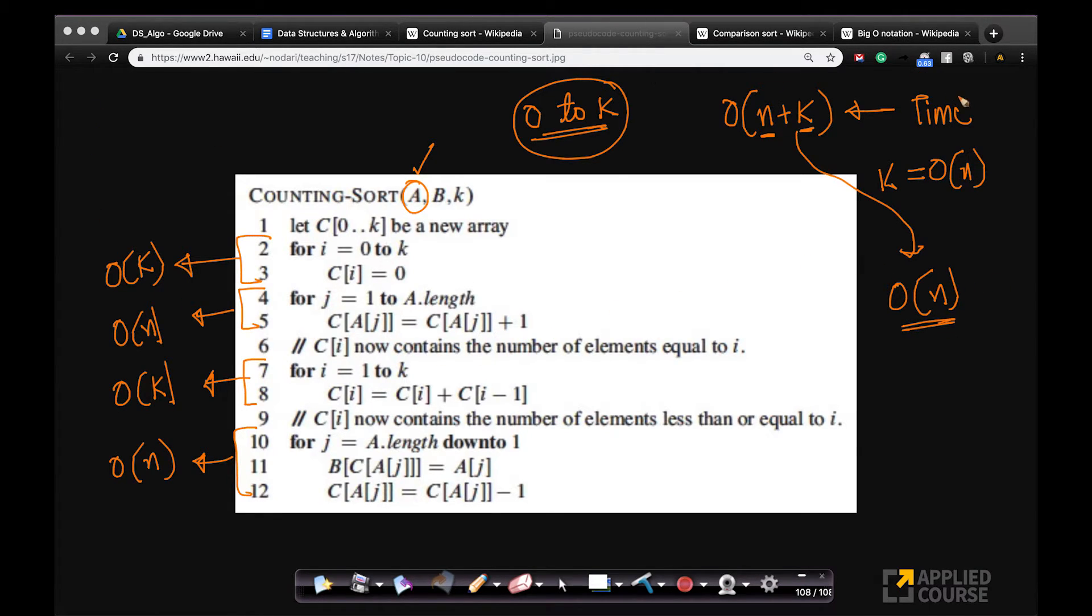So the time complexity of counting sort, assuming that k itself is order of n, is order of n. If k is not equal to order of n, then the time complexity is order of n plus k. If you have k distinct values in the range of 0 to k that you have in the input array, that's important. So time complexity is straightforward. You just analyzed the loops.